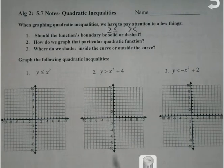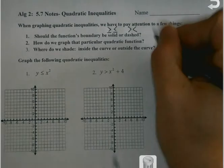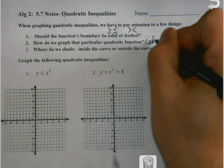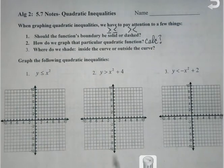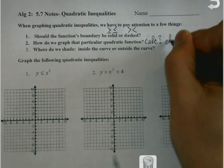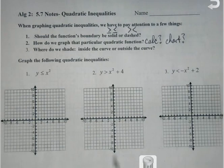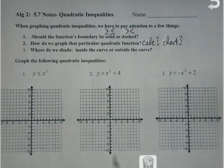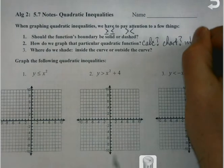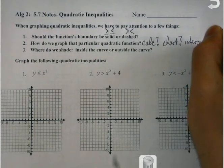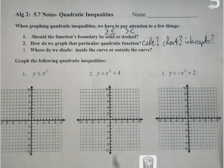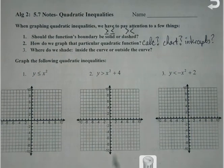How do I graph it? Do I have to use vertex form? Well, it's going to depend. Sometimes we're going to use the calculator, sometimes we may use a chart, and then sometimes, depending on the way it's written, we may use intercepts. We'll see the way it's written out to determine which way we're going to do that for each one.